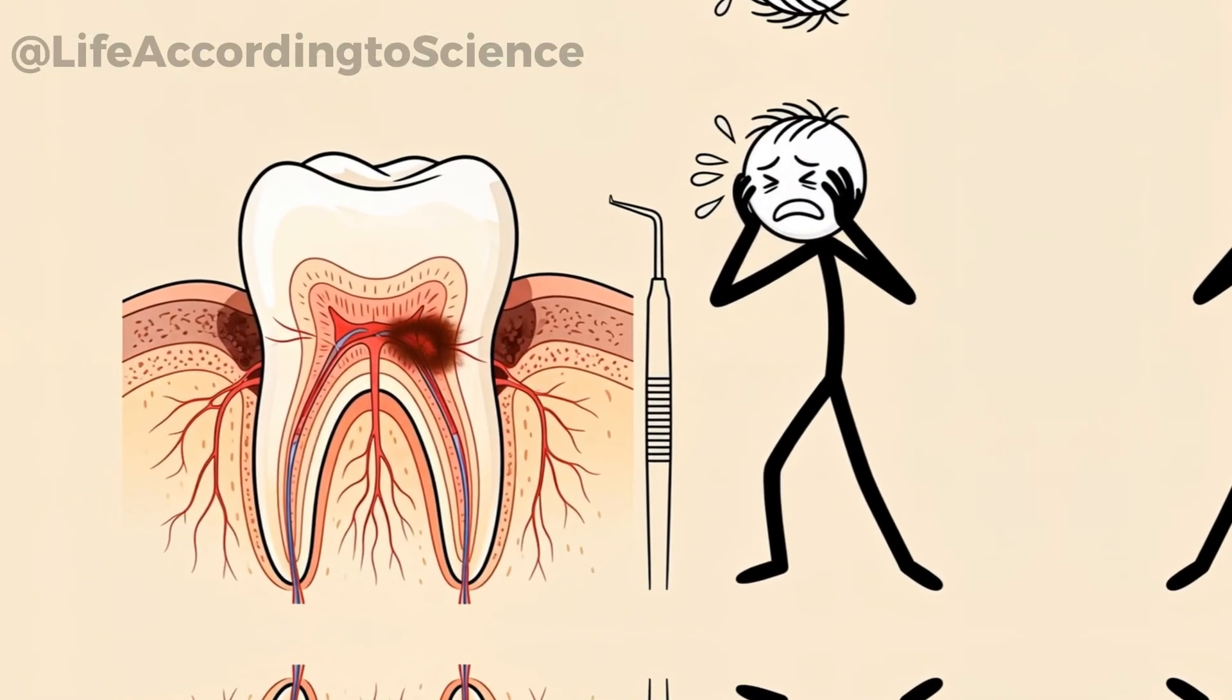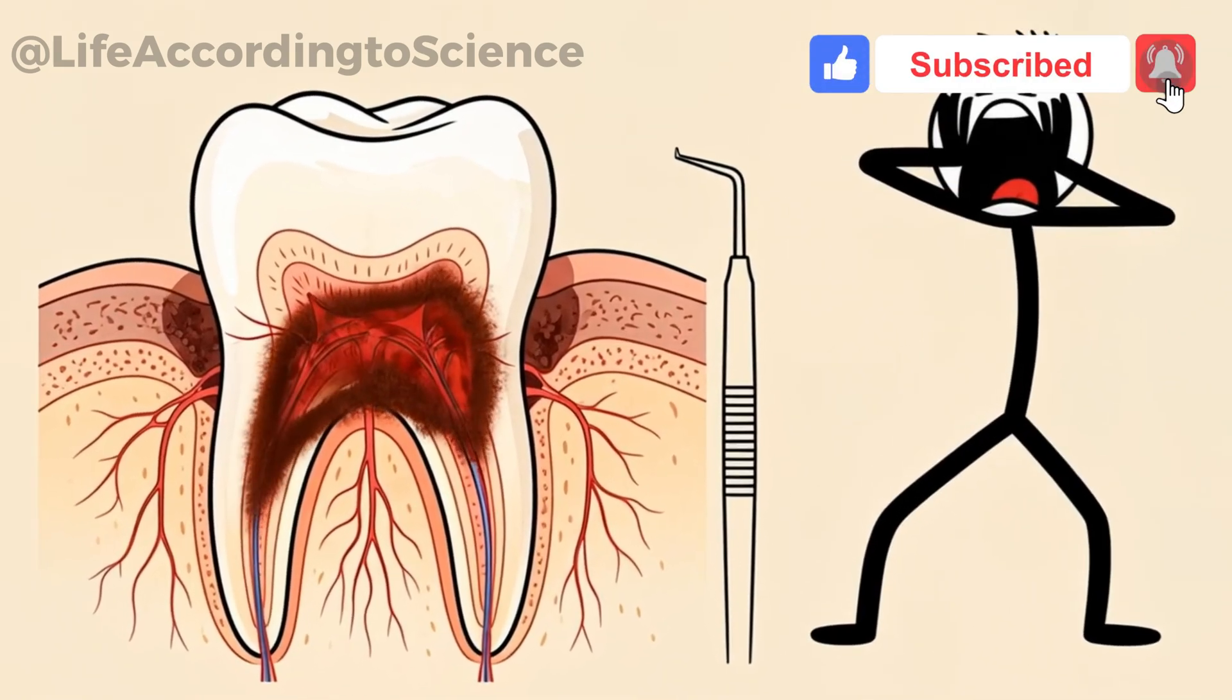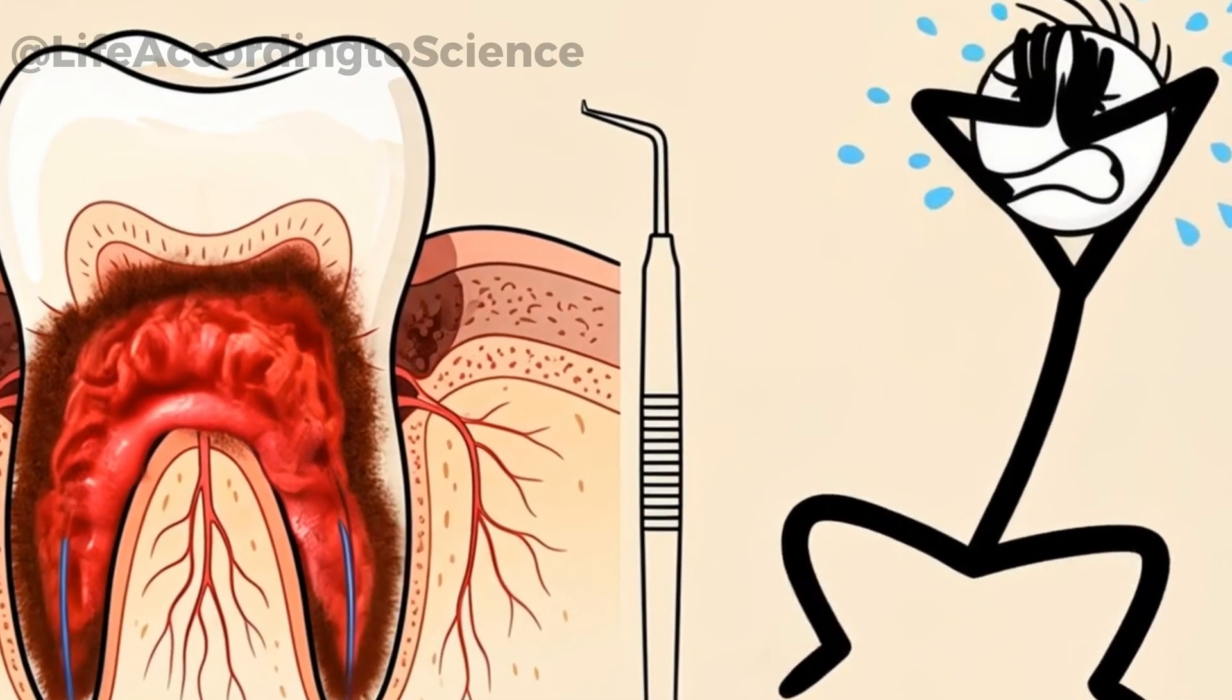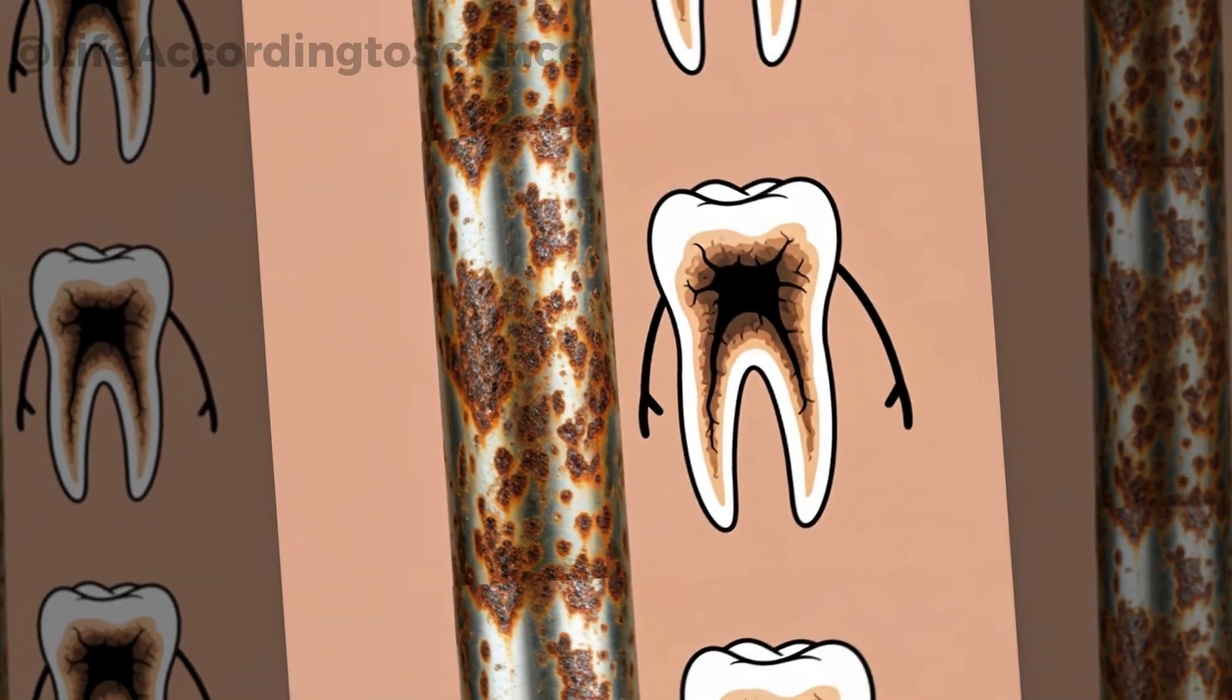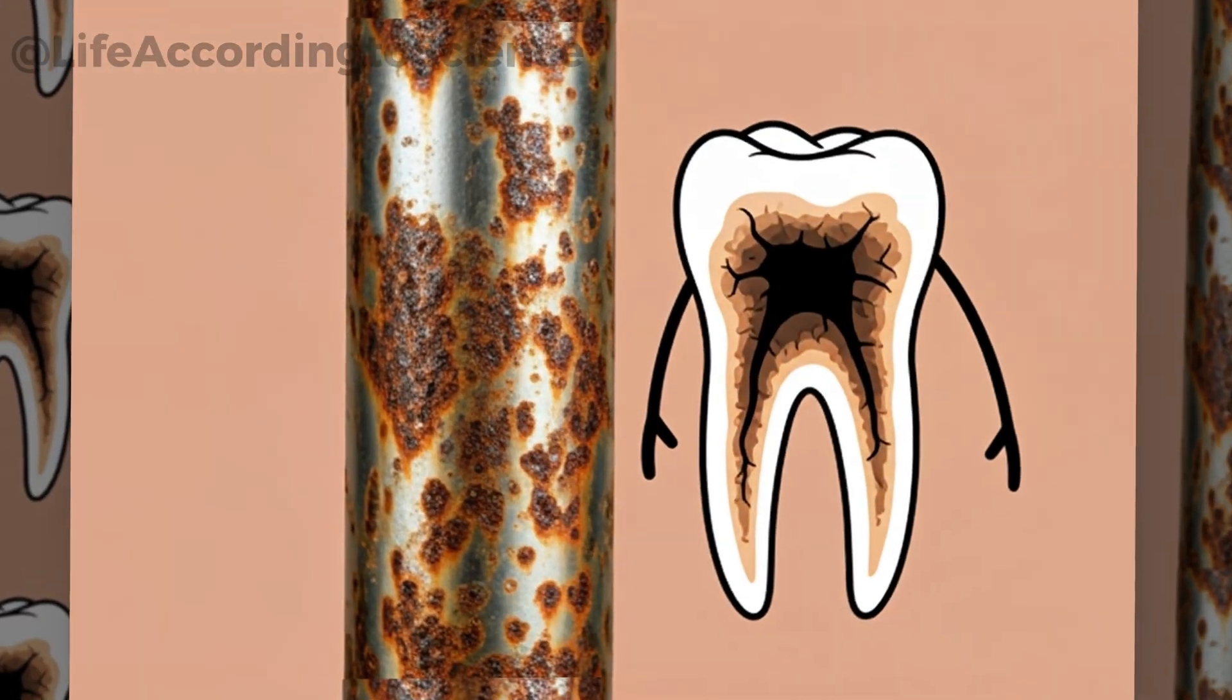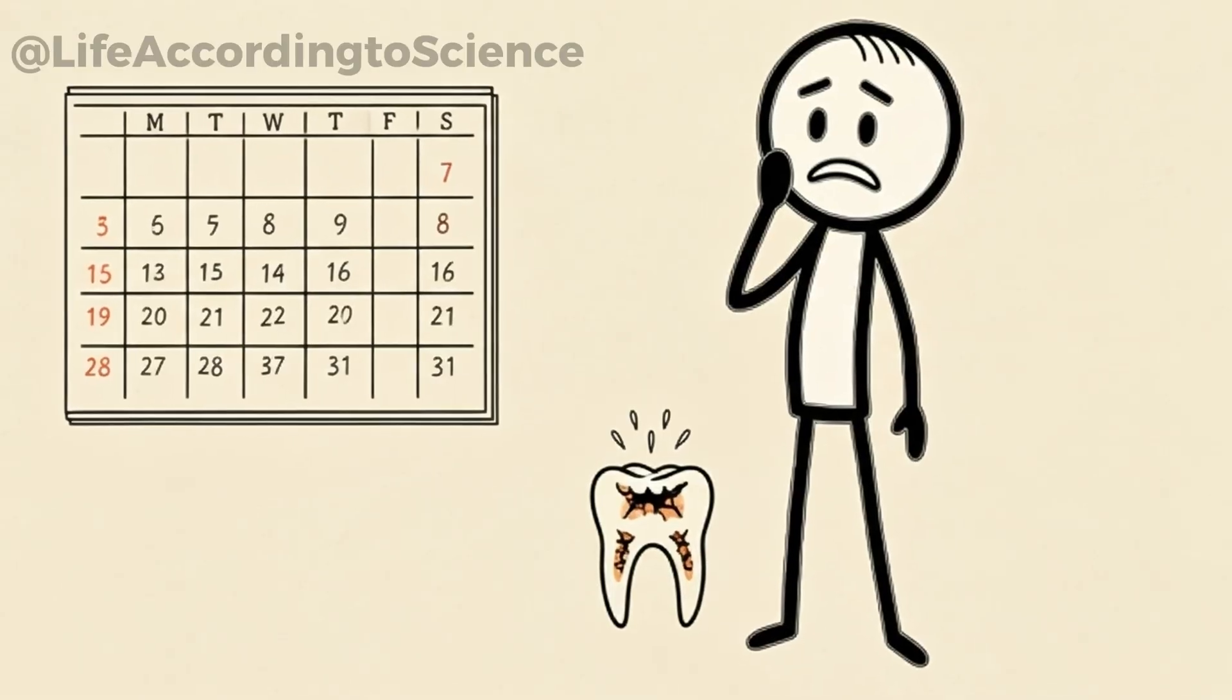If untreated, the damage eventually reaches the pulp, where nerves and blood vessels live. That's when the pain becomes sharp, often requiring root canal treatment or even extraction. Cavities are like rust on metal. Once they start, they spread silently and relentlessly until they compromise the entire structure. Six months of neglect gives them plenty of time to grow.